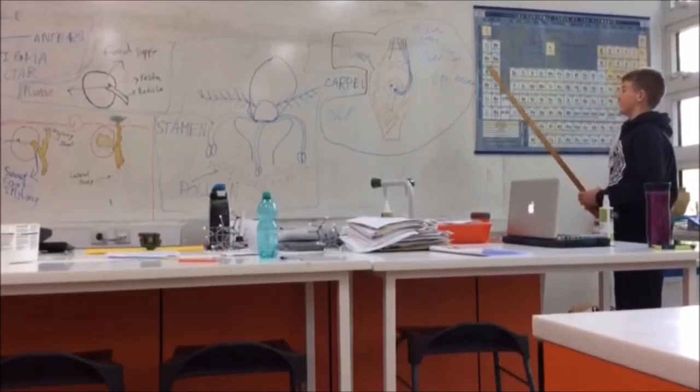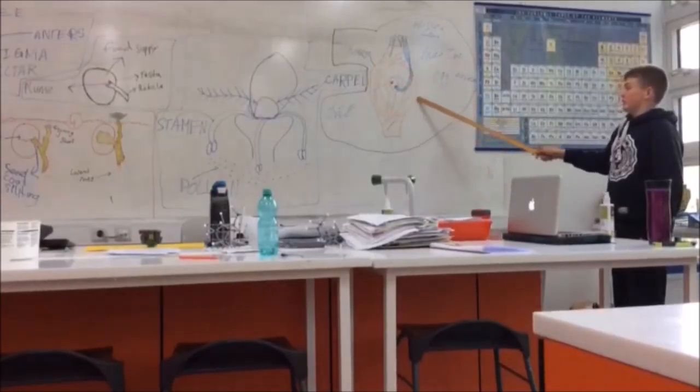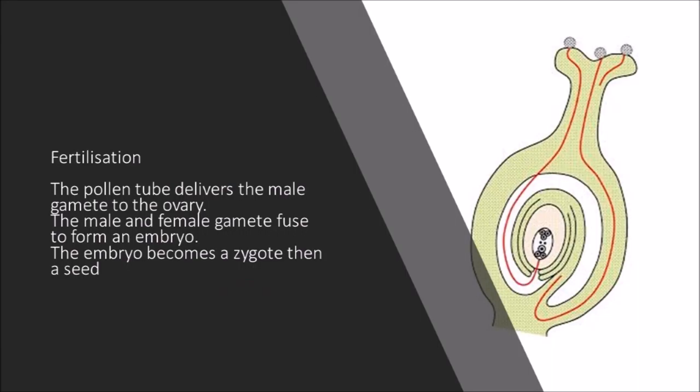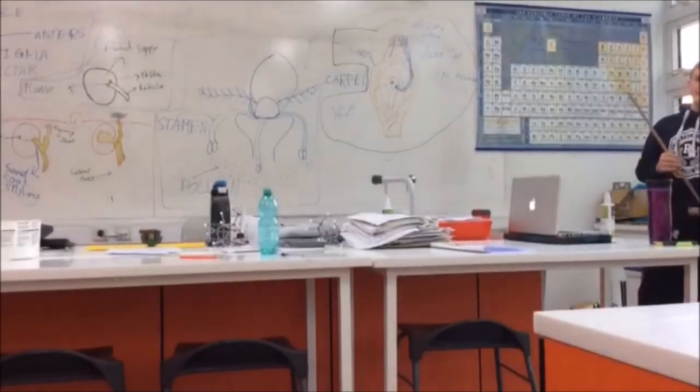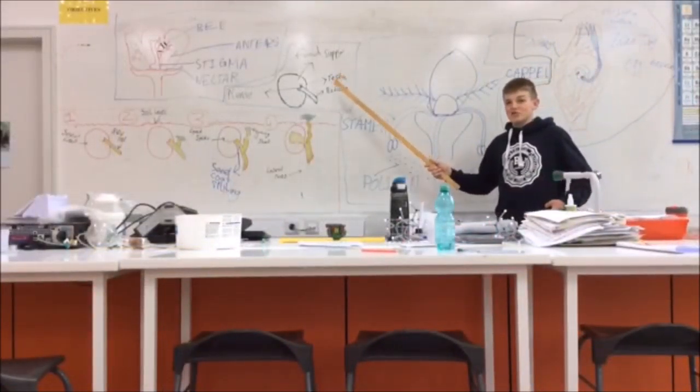In this case here, the ovary will protect this egg from the harsh conditions of the outside world. And that ovary is contained inside of the ovary. The male and female gametes fuse to form an embryo and the embryo becomes a zygote, which then becomes a seed.